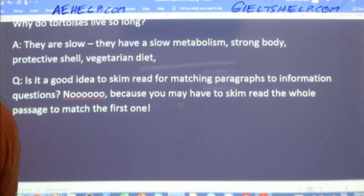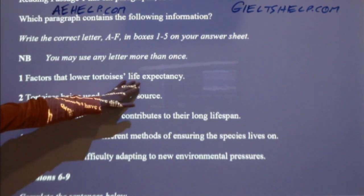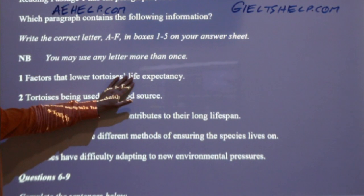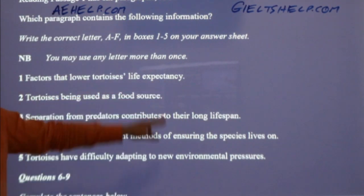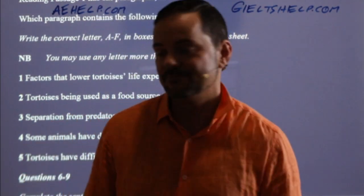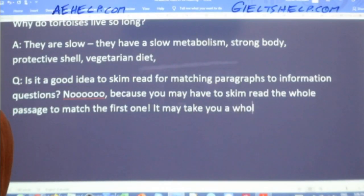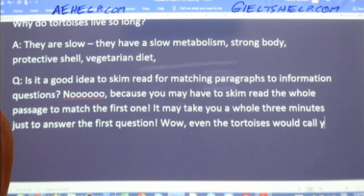For example, number one here says 'factors that lower tortoise's life expectancy.' What if that answer is the last paragraph — paragraph G, the conclusion? You'd have to skim read the whole passage to figure out your answer for the first question. That would be even slower than the tortoise. It may take you a whole three minutes just to answer the first question. Even the tortoise would call you slow.